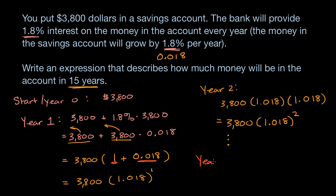Year 15, we're going to have the original amount that we invested, and we are going to grow 1.018 15 times. So we're going to multiply by this amount 15 times to get the final amount: 3,800 times 1.018 to the 15th power. This is actually called compound growth, where every year you grow on top of the amount that you had before.